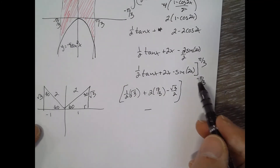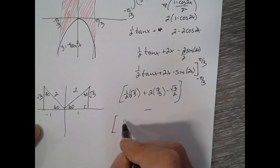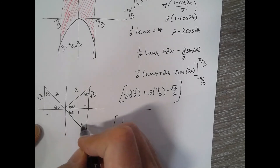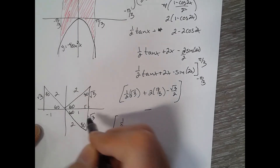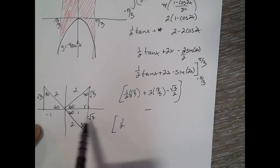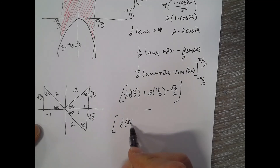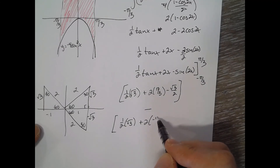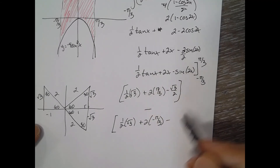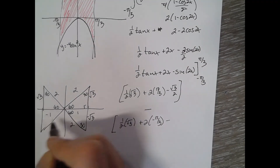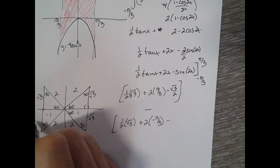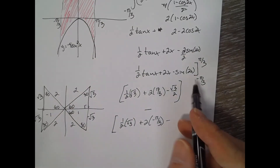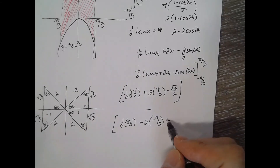Subtracting and plugging in negative pi over 3: tangent of negative pi over 3 uses another 30-60-90 triangle — the side goes negative because it's going down — so tangent is negative square root of 3. That gives one-half times negative square root of 3, plus 2 times negative pi over 3. Then sine of negative 2pi over 3 has a 60-degree reference angle and is also negative, so sine equals negative square root of 3 over 2, making the last term plus square root of 3 over 2.